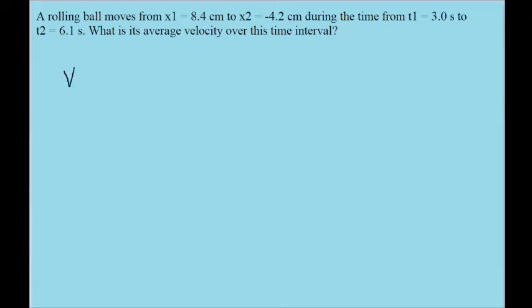This is pretty easy to find with this information, since the average velocity is by definition just the net change in position, or its displacement, divided by the change in time over the interval.